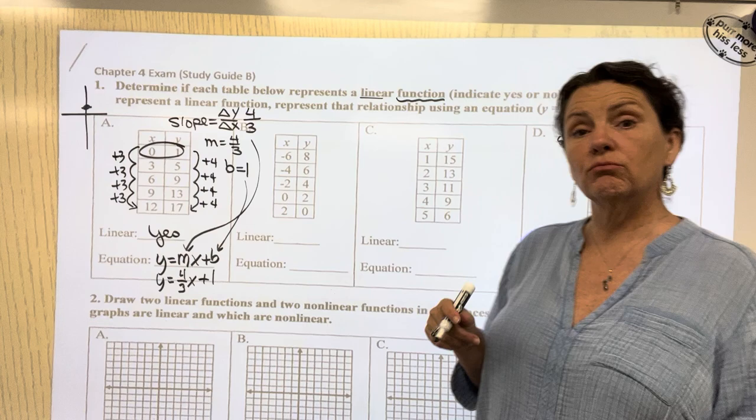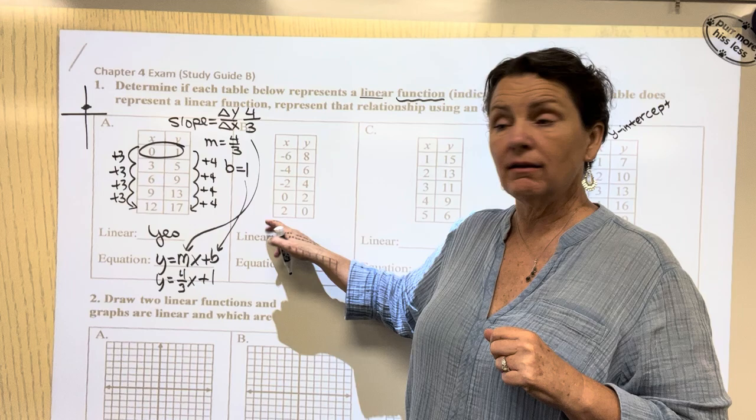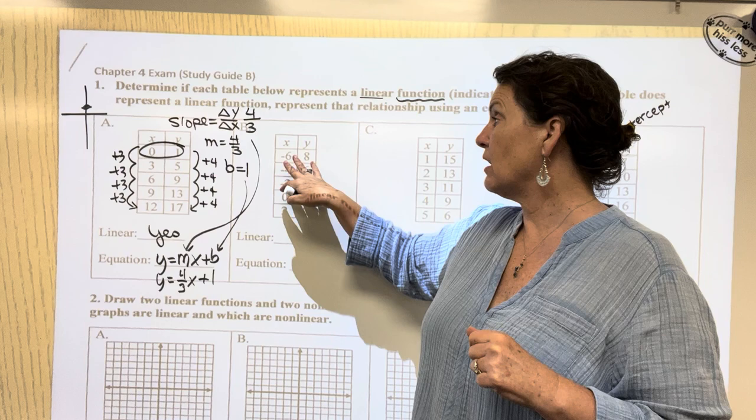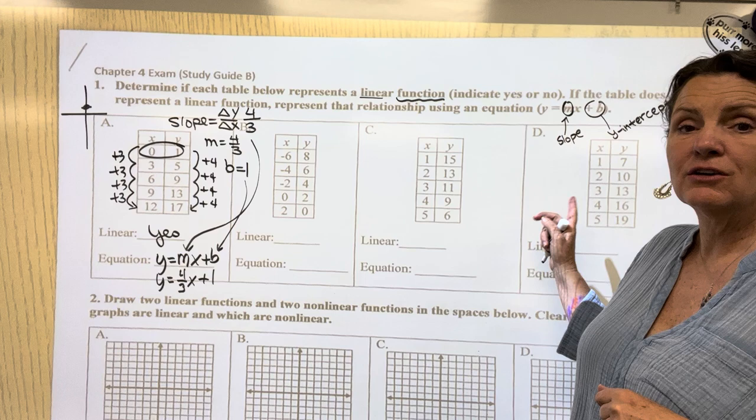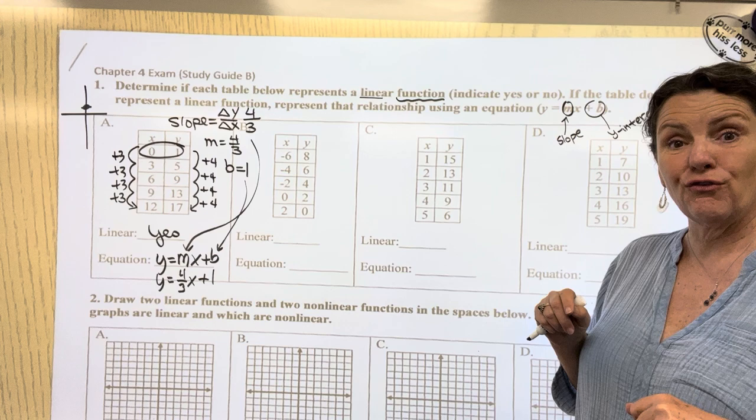So remember the first thing we do is find our change on each side. If it's constant on both sides, we know it is in fact linear. And then that means you need to find the two ingredients, slope and y-intercept, that you're going to need to create the equation. You're going to do that here and here. This one's a little slightly spicy. This one's a little spicy. So this one you're going to have to work a little bit harder to find your y-intercept. So if you want to pause the video, go for it and then come back.